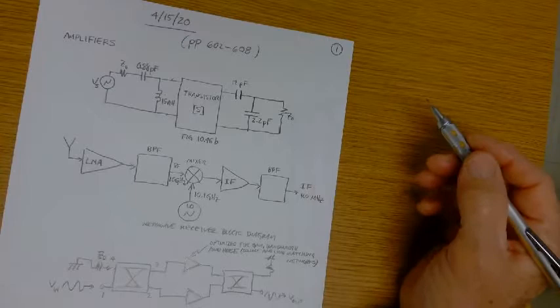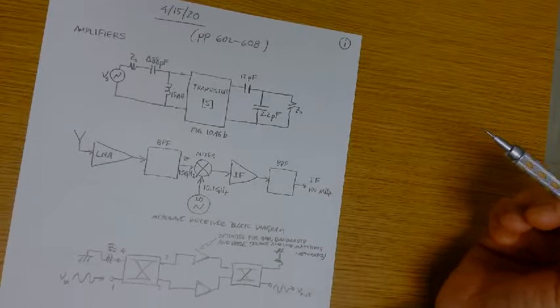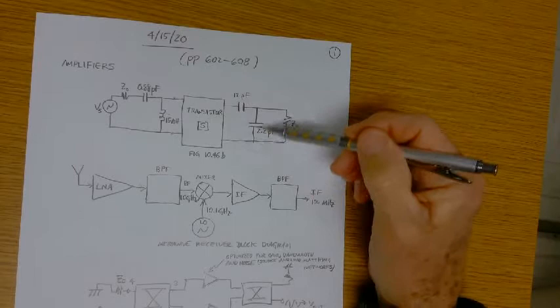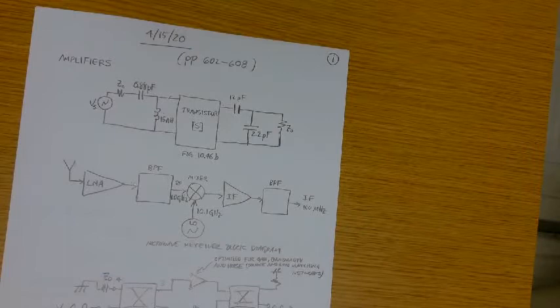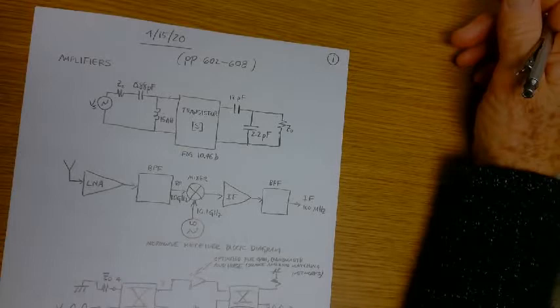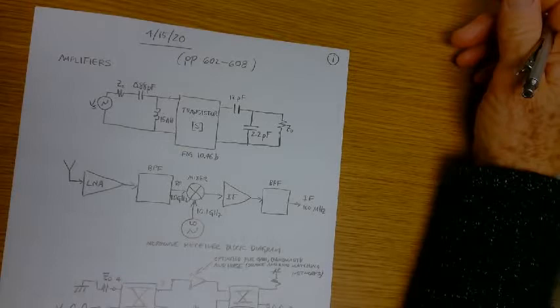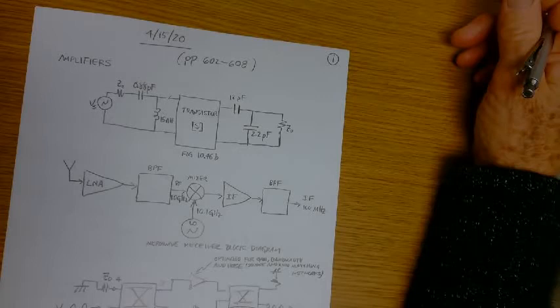Okay, so that's kind of a review. This figure 10.46B is kind of a review of what we achieved last time. This is done with a Smith chart. We can design these matching networks, input and output matching networks through either lumped elements or alternatively through stubs or some combination of the two. Don't forget your Smith chart work and that's pretty important.